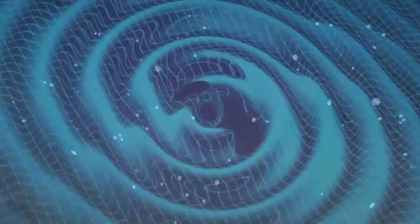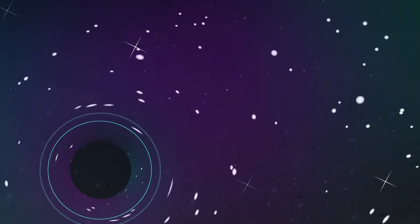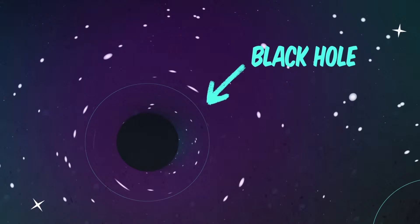Just as dropping a stone in a pond will produce ripples, the most massive objects in the universe, things like neutron stars and black holes, create waves when they crash into each other.